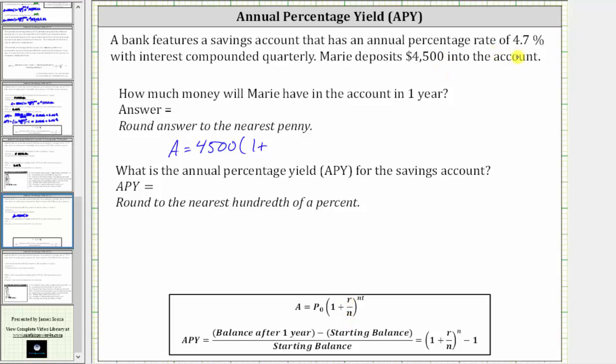Because the percentage rate is 4.7%, as a decimal this is 0.047, which means r is 0.047. Then n, the number of compounds per year, is four, because the interest is compounded quarterly. This is raised to the power of n times t, where n is four, and t is the time in years, which is one.